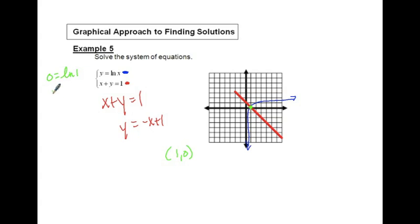And we have 1 plus 0 equals 1. And both of those work. And that's it for number 5.